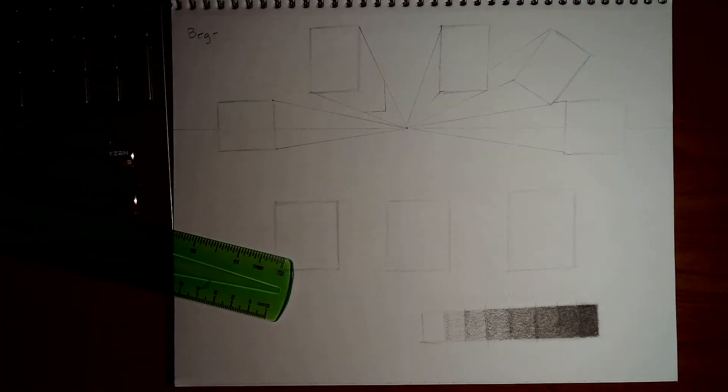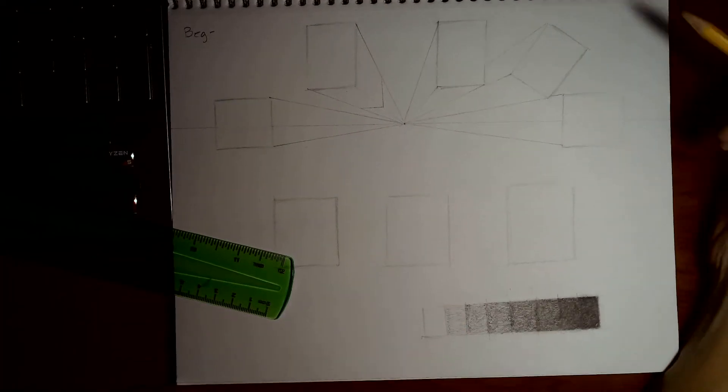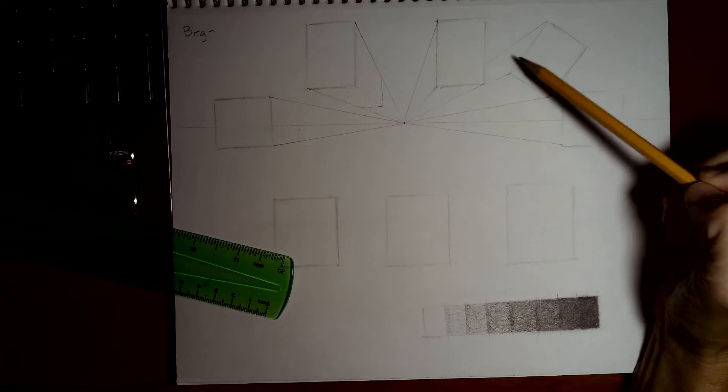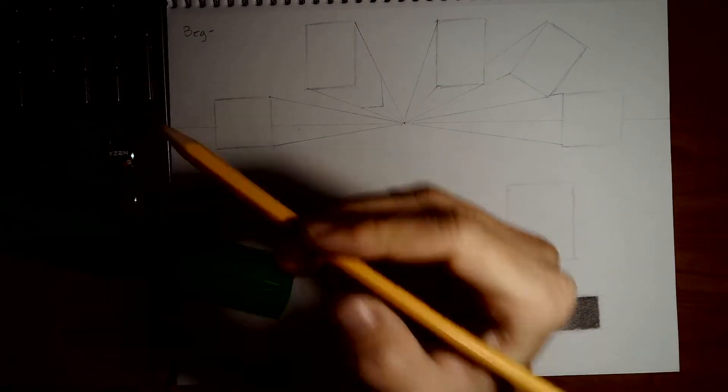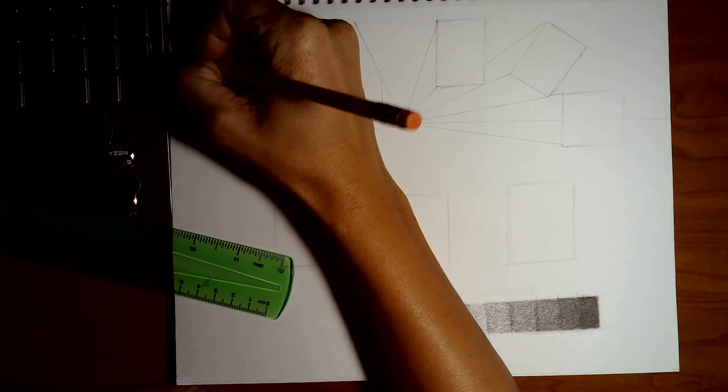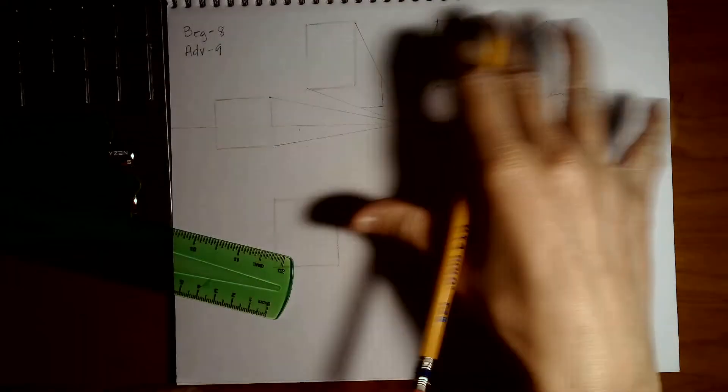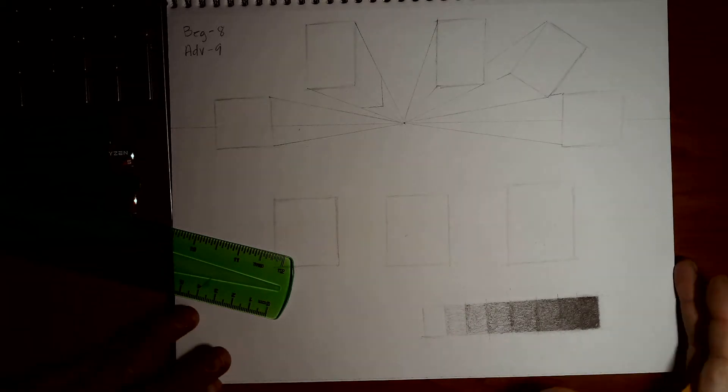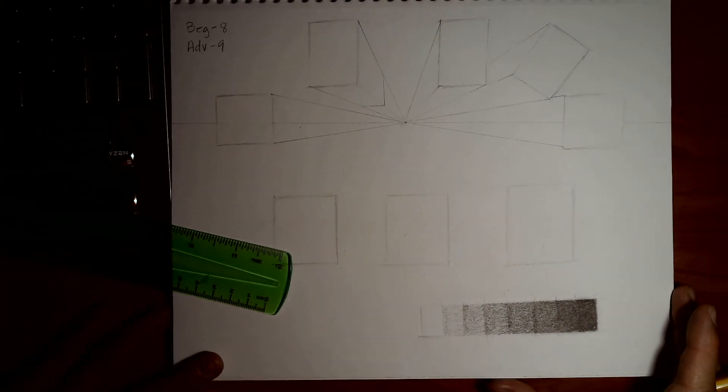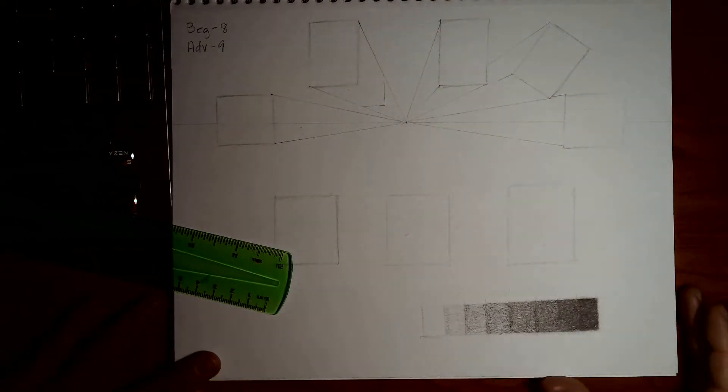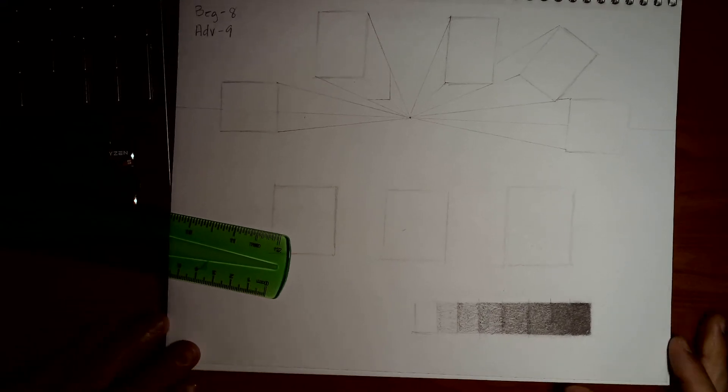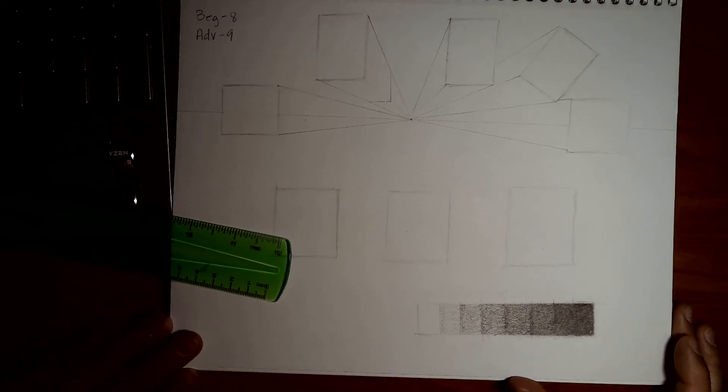So our beginning students, I'll just put BEG for beginning, you guys had eight total boxes on this assignment. You had one, two, three, four, five, six, seven, and eight. So the advanced students had nine boxes, and the formation was a little bit more complicated for advanced. So if you're advanced, this assignment will apply to you in the same way, but the demonstration is going to be on a beginning assignment.